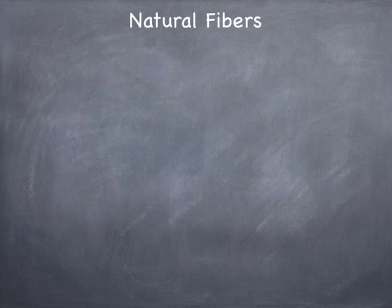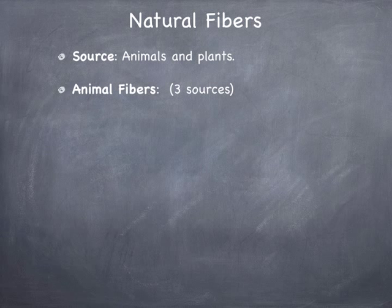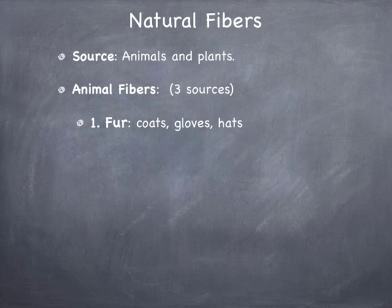There are two main categories of fibers. The first are natural fibers, which come from animals and plants. When we look at animal fibers, there are really three sources. The first is fur, and animal fur is used for coats, gloves, hats, and mittens. The three main types used are rabbit, mink, and fox.